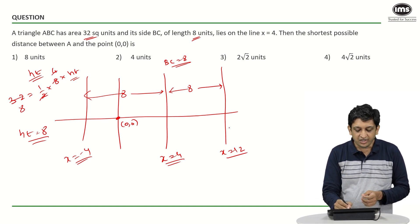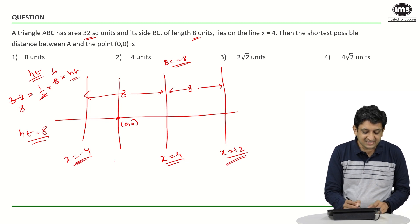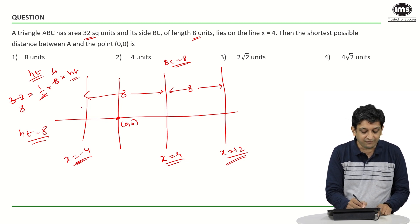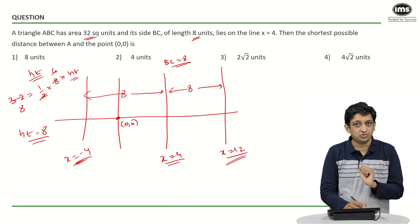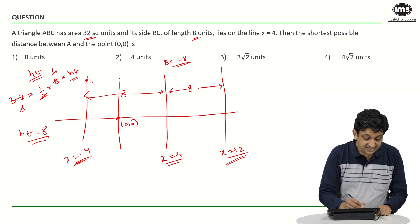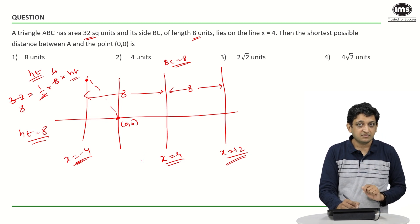That is why what we have to do in this context is put A somewhere on this line. Now let us say I put this point A here. The distance between A and the origin will be the dotted line that I have drawn.